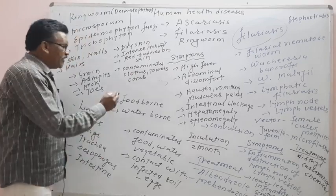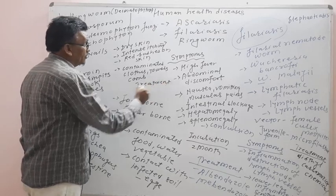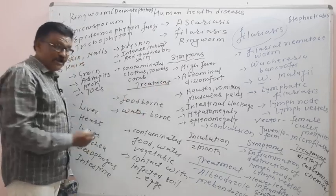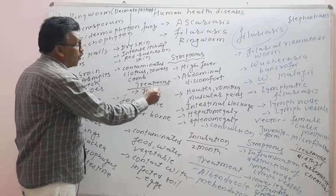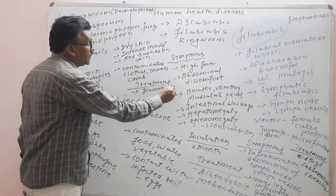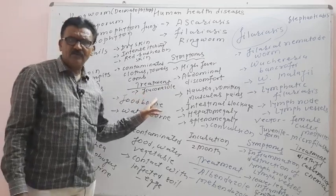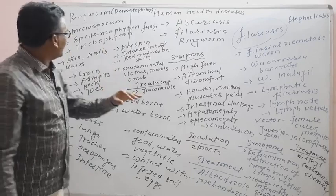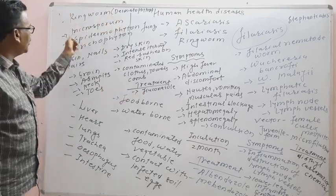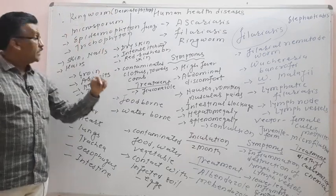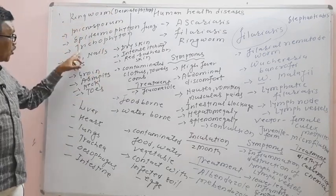The treatment for ringworm involves antifungal drugs. Fluconazole is an antifungal drug used to stop the fungal infection. The pathogens causing dermatophytosis are Microsporum, Epidermophyton, and Trichophyton.